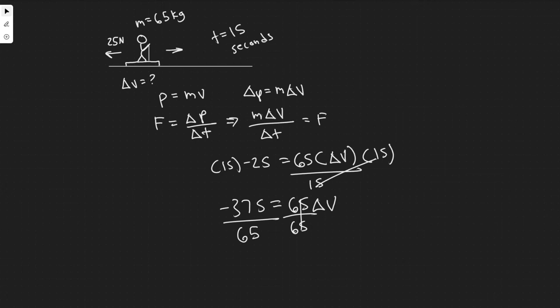So minus 375 divided by 65. You'll get change in velocity equals minus 5.769. You can basically round it to minus 5.77.